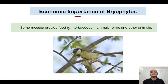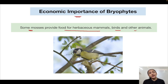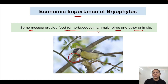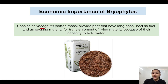Economic importance of bryophytes: some mosses provide food for herbaceous mammals, birds, and other animals. Species of Sphagnum, also known as cotton moss, provide peat. Peat is a brown fibrous substance obtained from Sphagnum that has a high capacity to hold water. It has long been used as fuel and as packaging material for the transshipment of living materials such as seedlings and plant cuttings.